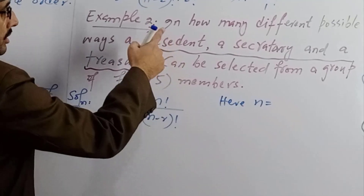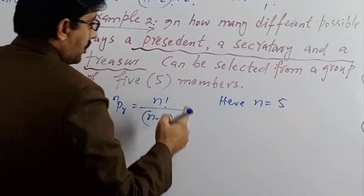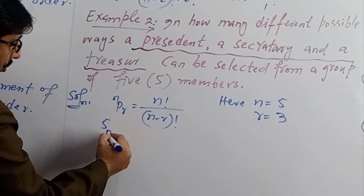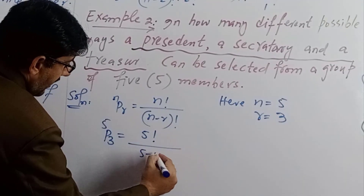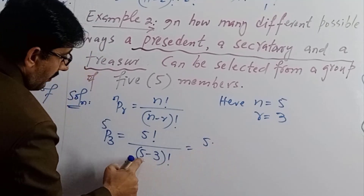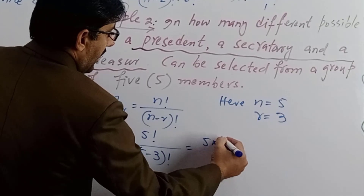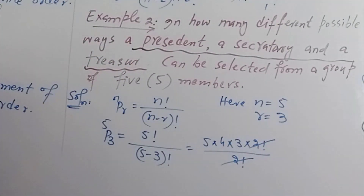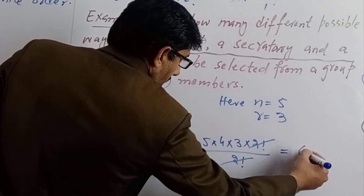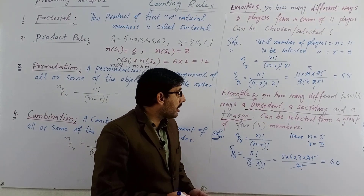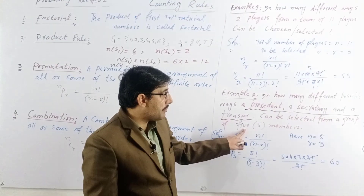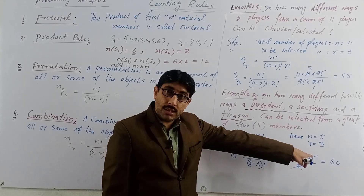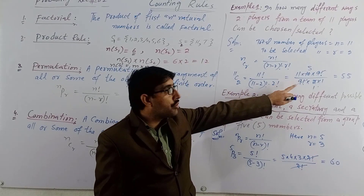Here n equals 5 total members, and we need to choose r equals 3 (president, secretary, treasurer). So 5P3 equals 5 factorial divided by (5 minus 3) factorial, which equals 5 factorial divided by 2 factorial. Opening: 5 multiply 4 multiply 3 multiply 2 factorial divided by 2 factorial. The 2 factorials cancel, giving 5 multiply 4 multiply 3 equals 60. So there are 60 ways. With combination it would have been 55 ways.